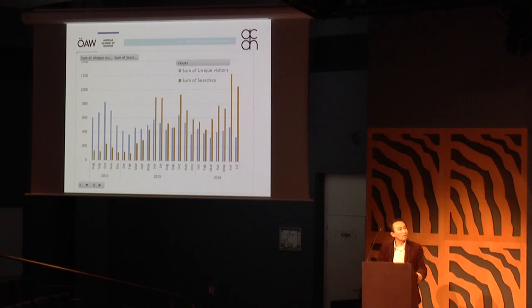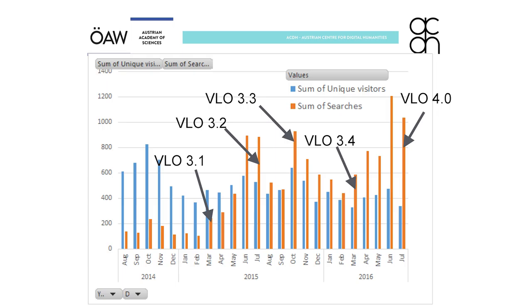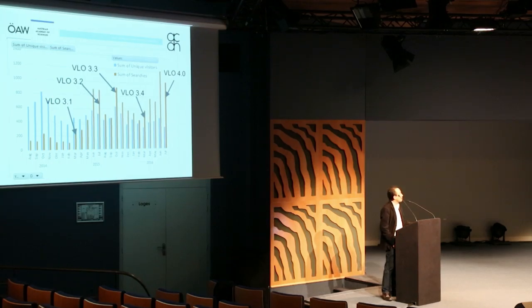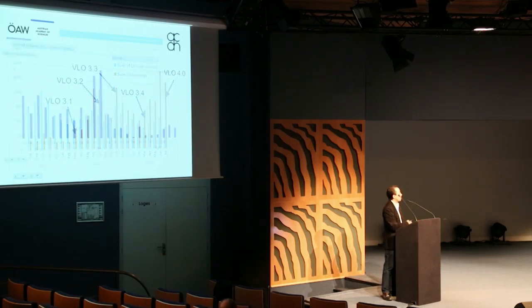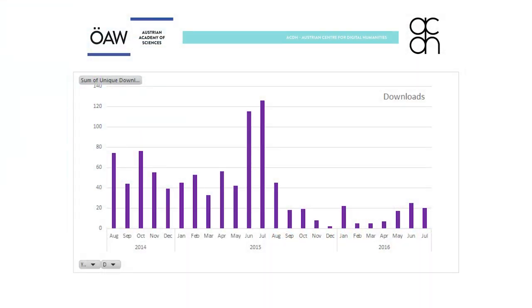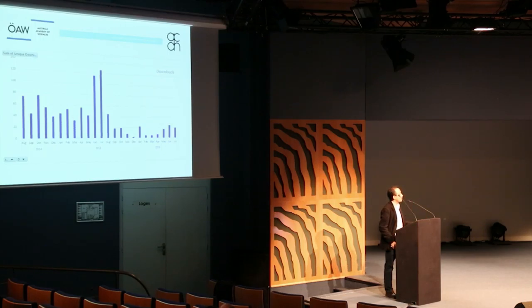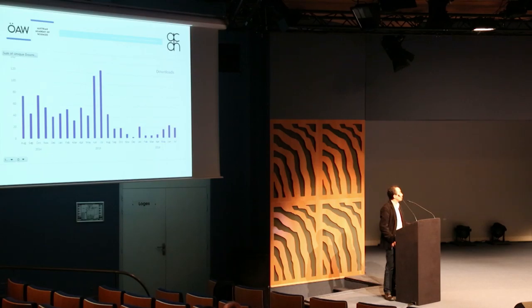I found some interesting trends. As I mentioned, there is a declining trend of unique visits. However, if you look at the number of searches in orange, you can see quite a dramatic change. There are many VLO releases in this period, and I couldn't really find out exactly why this happens — but this is how we can try to analyze the situation. Similarly for downloads, you can see a complete change in user behavior: users are downloading less and less, while in the previous slide users are searching more and more. This is also useful in order to develop software from a marketing point of view.